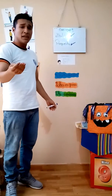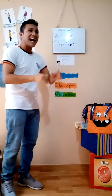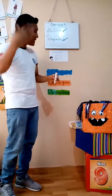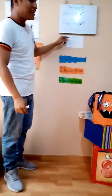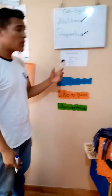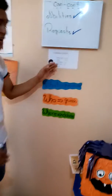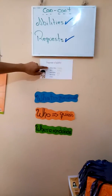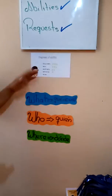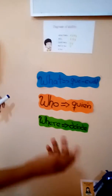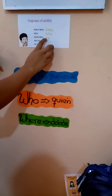But you are in fourth or fifth secondary, so let's see a complement to this grammar — degrees of ability, also known as quantifiers. Here we have five degrees of ability or five quantifiers: really well, well, quite well, not at all, and at all — zero. Here I have four stars, three stars, two stars, one star, and zero stars.